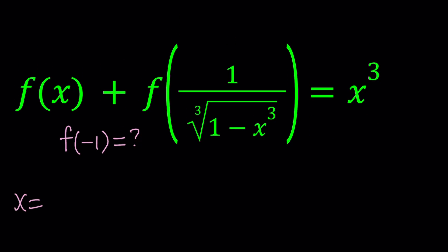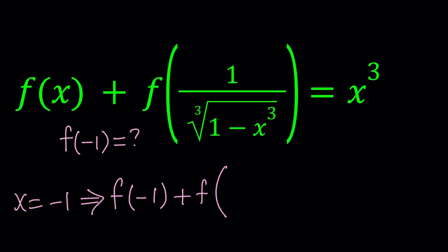Replace x with −1 and see what happens. Even if you don't have any ideas, because of the presence of f(x), you can always try something like this. When I replace x with −1 on both sides, I'm getting f(−1) + f(1/∛2). Because −1 cubed is −1, and 1 − (−1) = 2, so you get 1 over the cube root of 2. On the right-hand side, (−1)³ = −1. So that's our first equation.